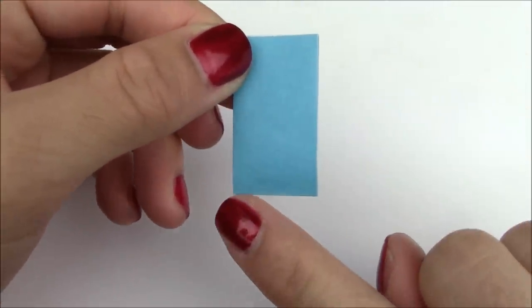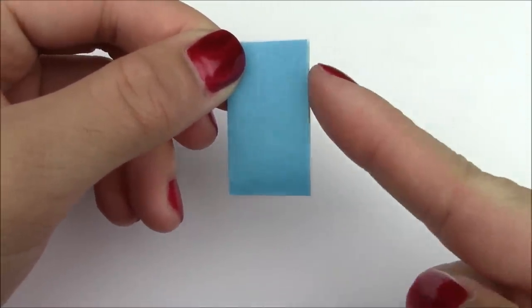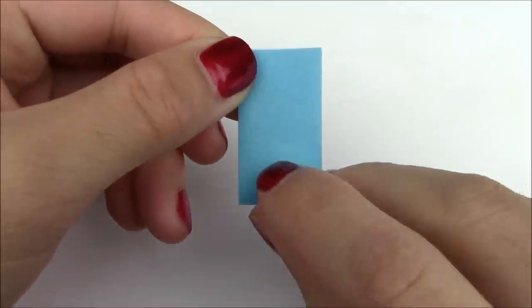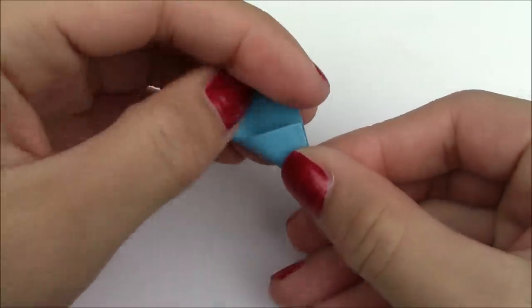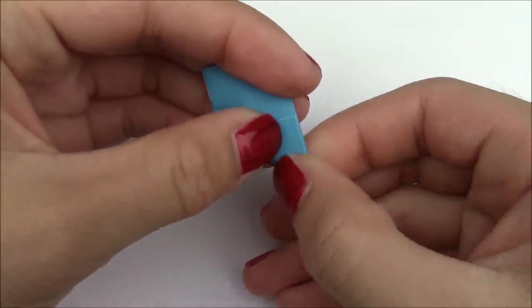And now you just want to take this side over here at the bottom and align it with this side on the right. So basically you're just going to fold up and diagonally like this. And then crease it in.